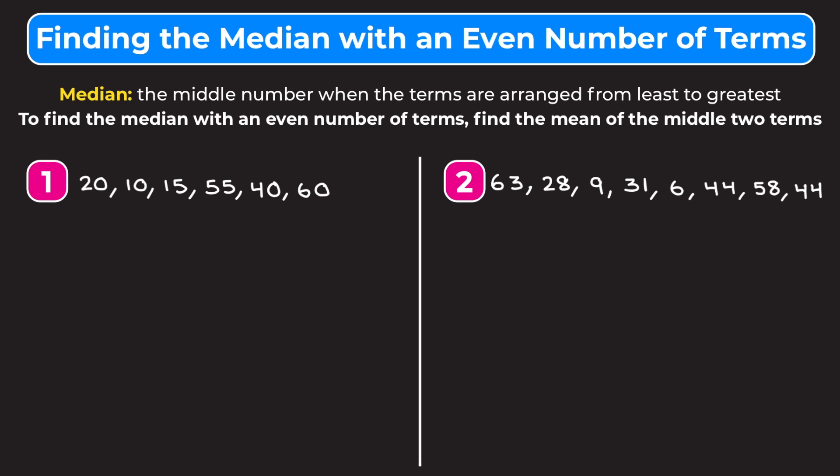Jumping into example one, we have this data set with six terms: 20, 10, 15, 55, 40, 60. We want to start by lining them up from least to greatest. We're going to put 10 first, that's our smallest number. I like to cross out the terms as I write them down so I make sure I don't forget any. Next we have 15, then 20, then 40, 55, and 60.